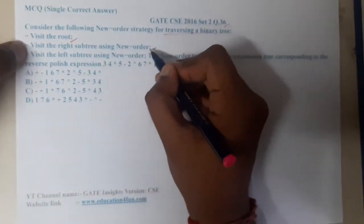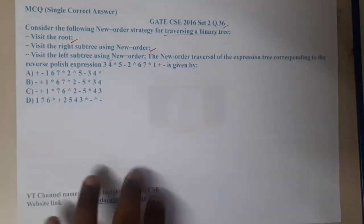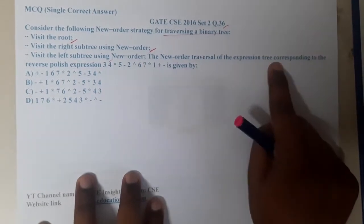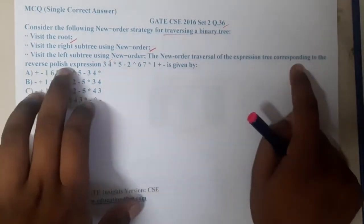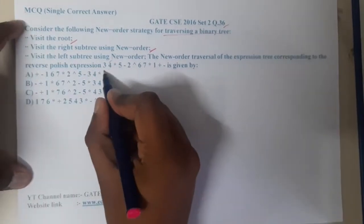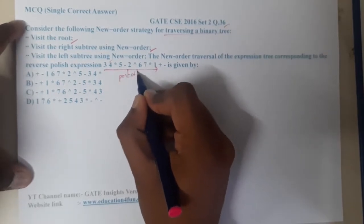So this is completely new, right? The new order traversal of the expression tree corresponding to the reverse polish notation expression 3, 4, *, 5, -, 2. So basically what is this notation guys? This notation is nothing but post order, right? So they gave you the post order.